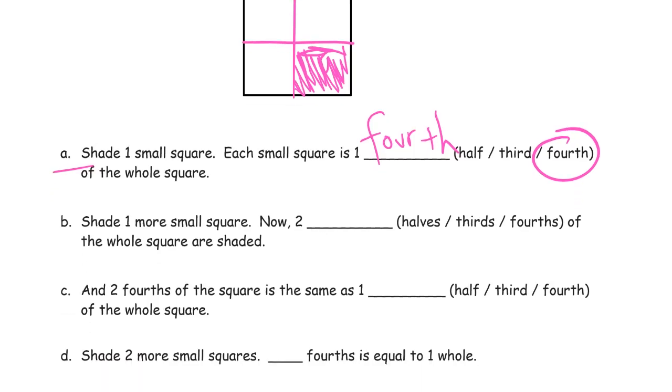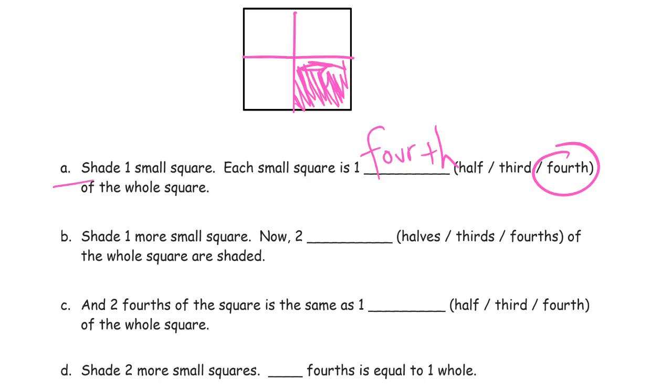Now it says shade one more small square. There. Now two. There's still fourths. Just because I'm shading them in doesn't mean I don't count them. There's still four of them. So it's two fourths. I'm just counting fourths.